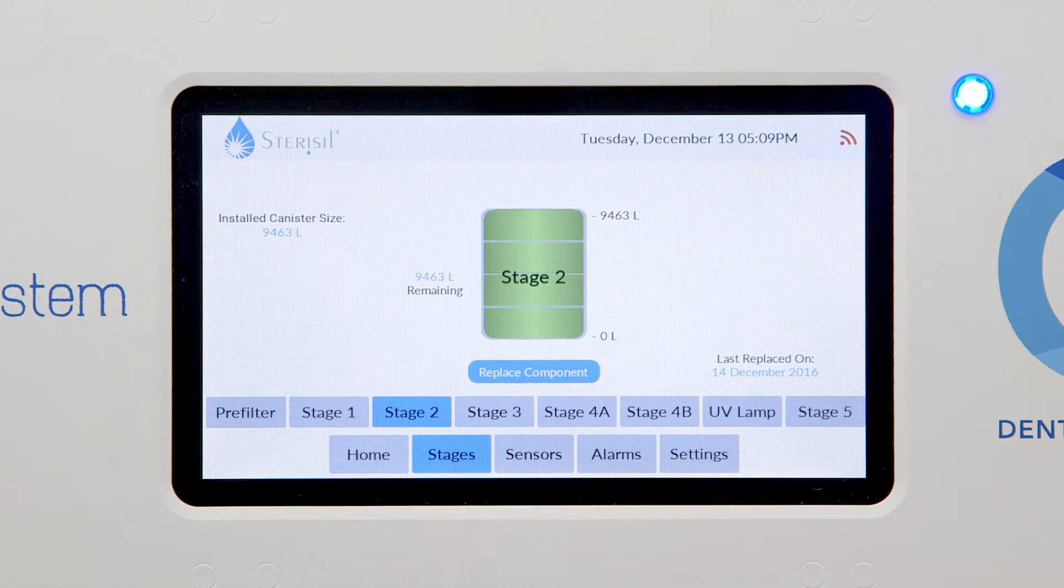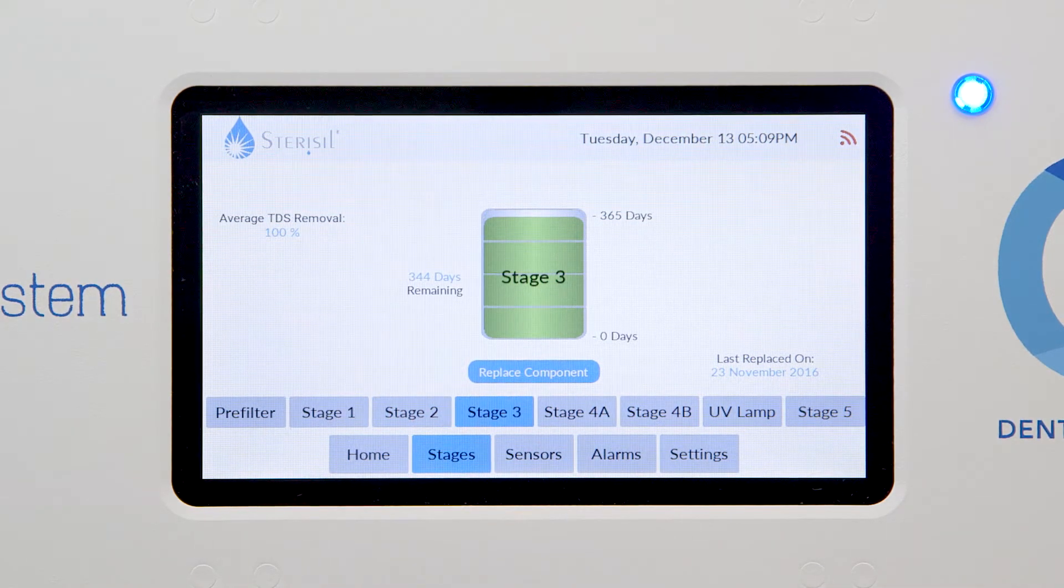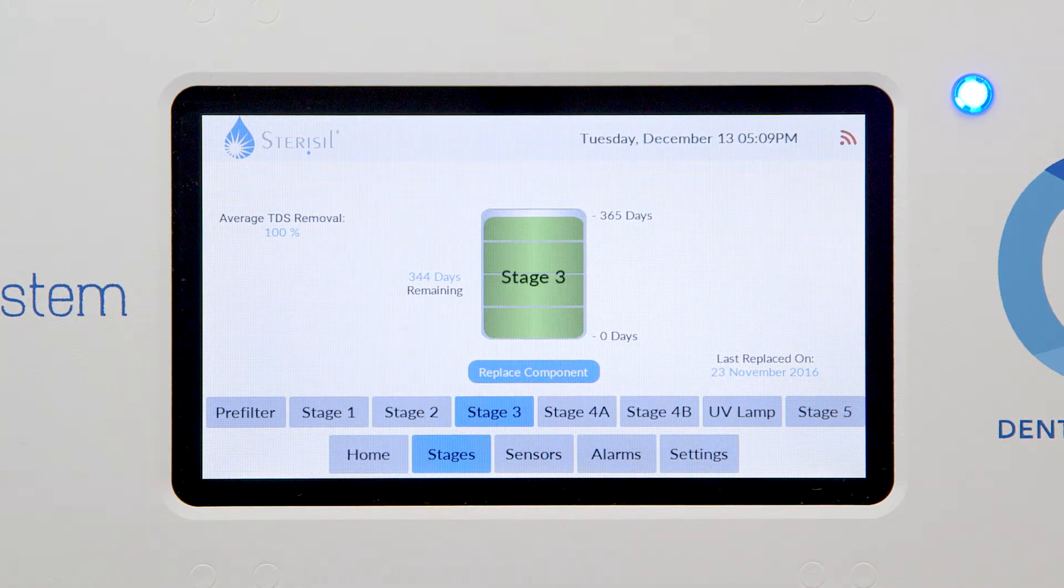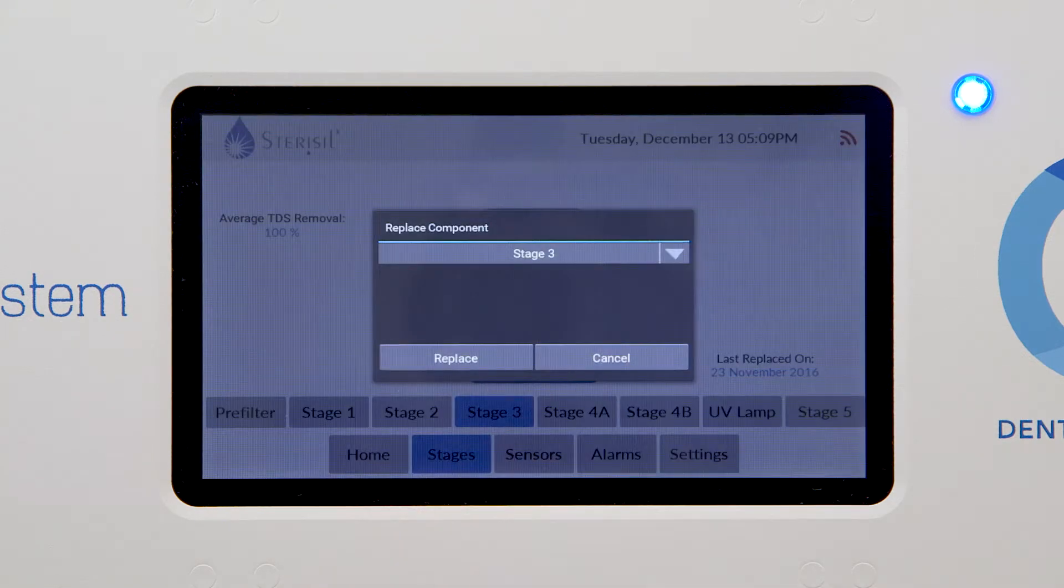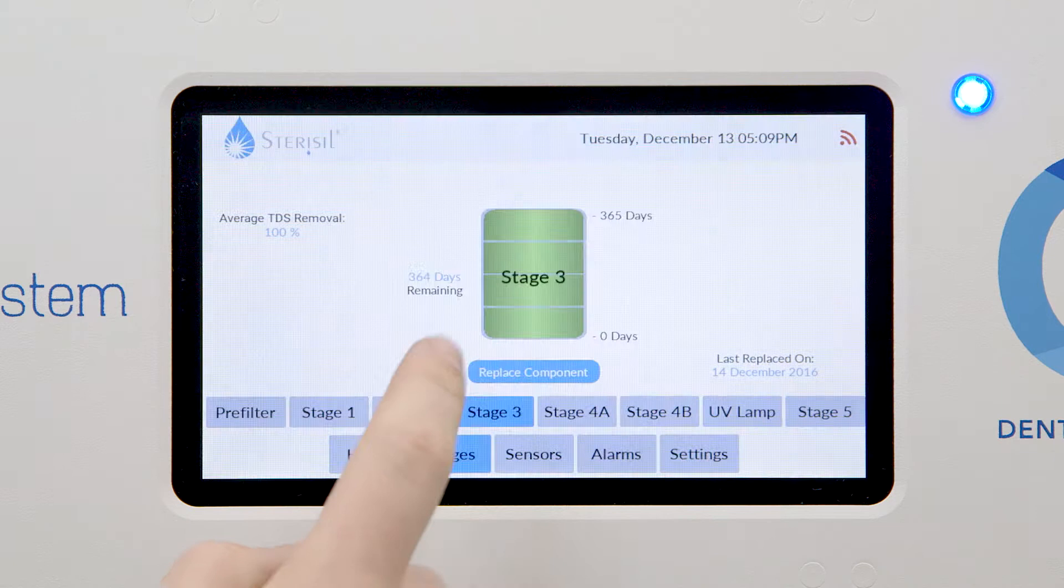Stage three's lifespan is based on either a 364 day count or the TDS water quality coming off it. If the counter on stage three is not reading 364 days, select replace component, then touch stage three from the drop down menu, and touch replace.